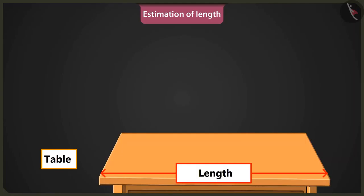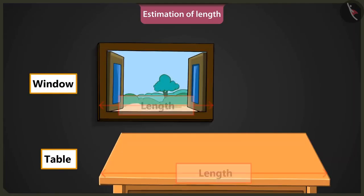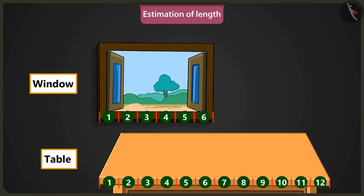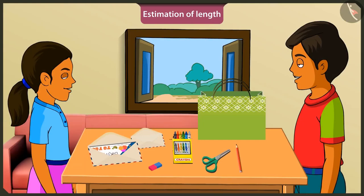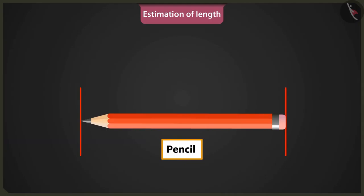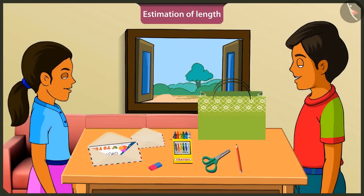Well done, Mintu! Now tell me, what is the estimated length of this table? This table looks longer than the window. The length of the window is six spans of my hand, so this table must be approximately twelve hand spans long. Now try to measure the length of this pencil with your palm. The length of this pencil is equal to one hand span.